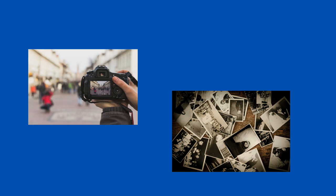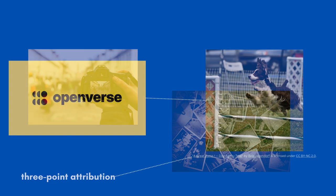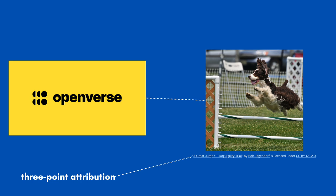When using images ethically, you are required to cite them within your work as well as in a works cited page. In another video, we taught you how to use OpenVerse to find images you can use under Creative Commons license and how to find the three-point attribution, which acts as an in-text citation for an image.